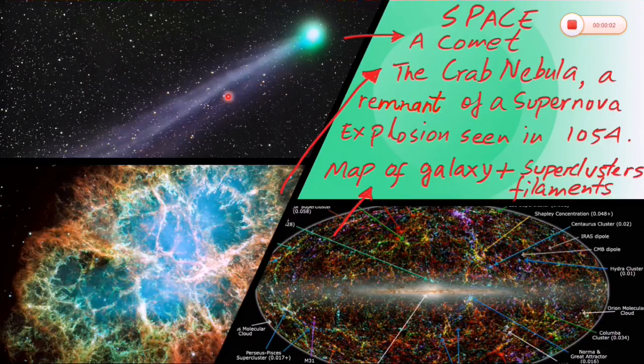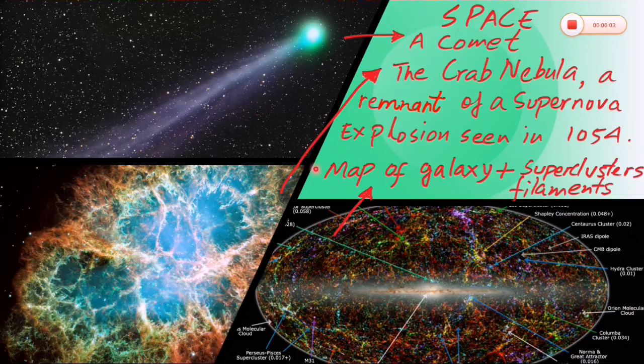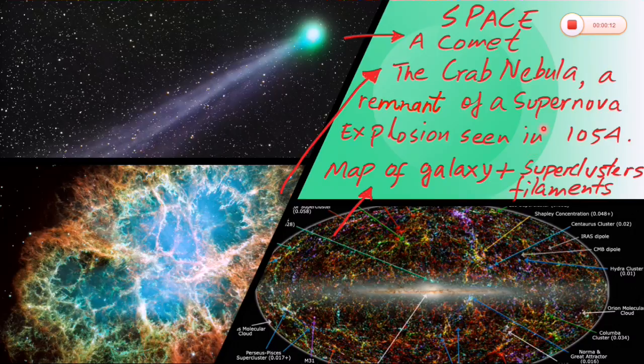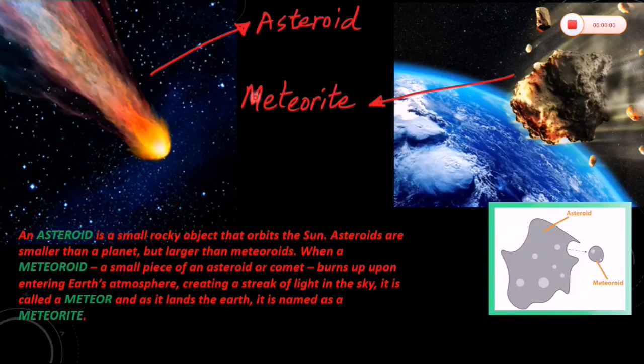Now here, this is a comet. It's the Crab Nebula, a remnant of a supernova explosion seen in 1054. And it's the map of galaxy and superclusters filaments. Here I would like to distinguish between asteroids, meteorites, and some similar terms.